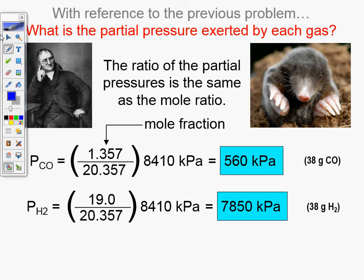Very simple — plug in the mole fraction and multiply it by the total pressure of 8410 kPa. Typical AP-style question. You can use whatever unit you want as long as they match up. If you used atmospheres, divide 8410 by 101.325 — you'll get your answer of about 11.4 atm.